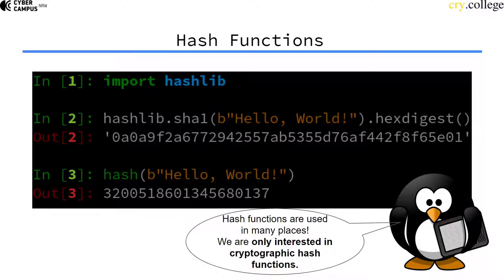If you use a hash function in Python, for example, you can import the hashlib from the standard library and call, for example, SHA1, which is a cryptographic hash function, and input some sort of byte string like 'hello world'. The output is actually a very weird mixture of randomly-looking bytes — that's what the hash function does: it takes an input and outputs something completely different.